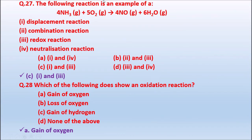Question 27: The following reaction is an example of — 4NH₃(g) + 5O₂(g) → 4NO(g) + 6H₂O. Option A: displacement reaction; Option B: combination reaction; Option C: redox reaction; Option D: neutralization reaction. Options for answers: A: 1 and 4; B: 2 and 3; C: 1 and 3; D: 3 and 4. The correct answer is C — displacement reaction and redox reaction (1 and 3).